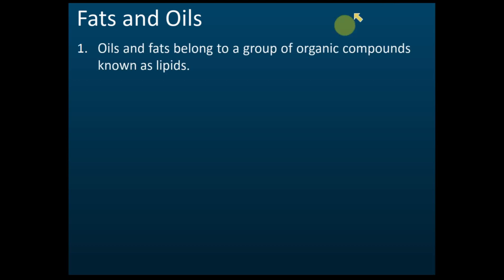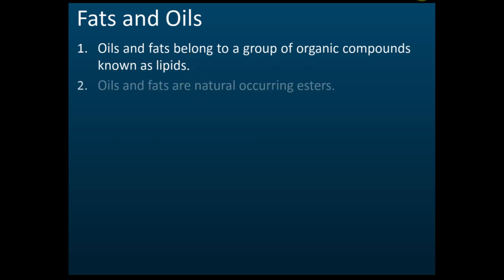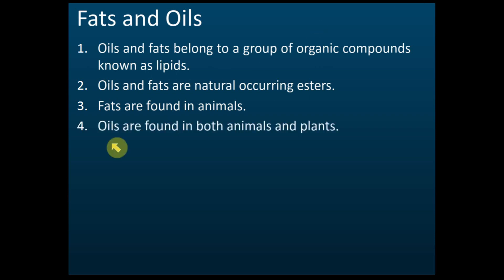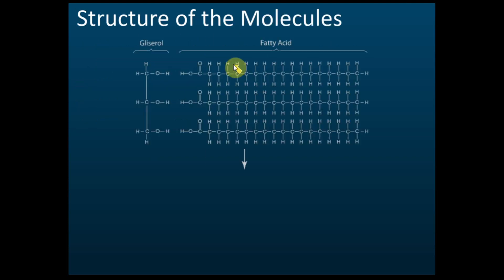Fats and oils belong to a group of organic compounds known as lipids. Oils and fats are naturally occurring esters. Fats are found in animals, while oils are found in both animals and plants. That is a brief introduction to fats and oils.